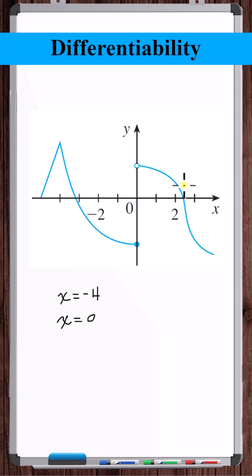What about here? Is there a vertical tangent here? No, this never gets vertical. So these are the points where this function is not differentiable.